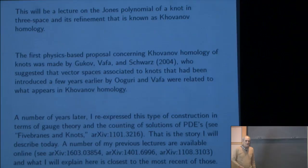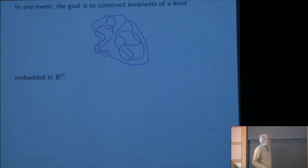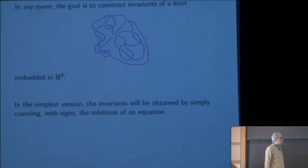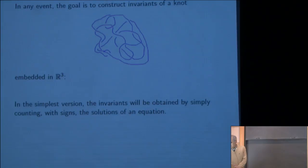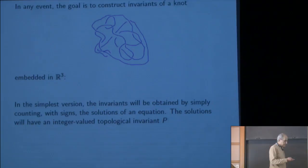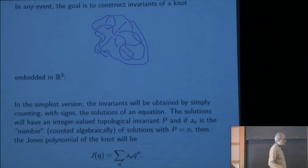The goal is to construct invariants of a knot in ordinary three-dimensional space. In the simplest version, we'll construct invariants by simply counting with signs the solutions of a partial differential equation. The solutions will have an integer-valued topological invariant that I'll call p. If a_n is the signed number of solutions where p equals n, then the Jones polynomial of the knot will be the sum of a_n times q to the n. a_n is supposed to vanish except for finitely many n, so this is supposed to be a Laurent polynomial.